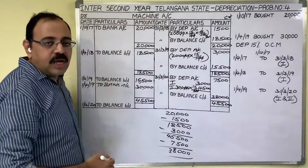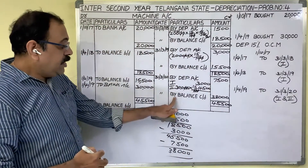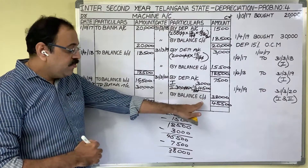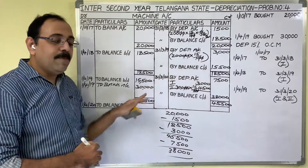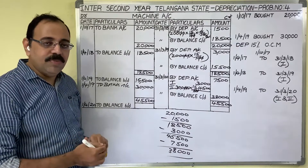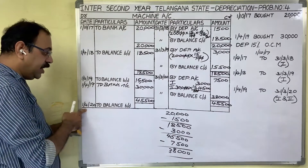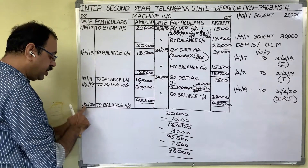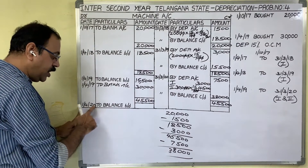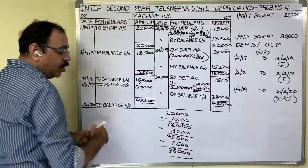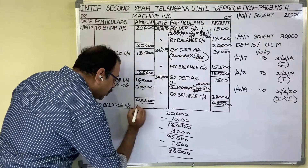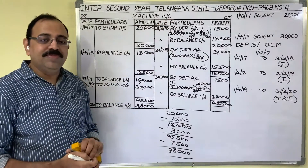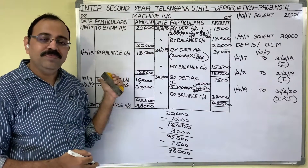For three years he asked, but the asset account is not closed. Therefore for the fourth year, bring the balance and leave the problem. The fourth year starting date is 1st April 2020. Write balance brought down as 38,000 rupees. So this is all about the fourth problem. Hope this video is useful to you. Thank you.